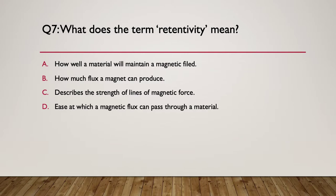Question eight: what does the term retentivity mean? Is it A — how well a material will remain in a magnetic field; B — how much flux a magnet can produce; C — the strength of the magnetic lines of force; or D — the ease at which magnetic flux can pass through a material? Pause here. Here's the hint: this word comes from the base word 'to retain.' Which description best fits?